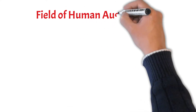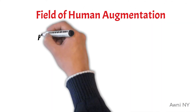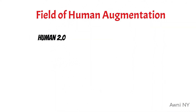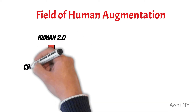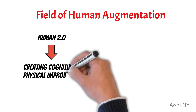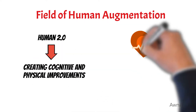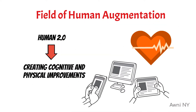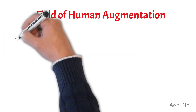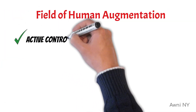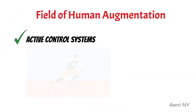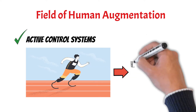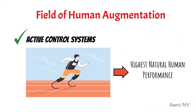The field of human augmentation, sometimes referred to as human 2.0, focuses on creating cognitive and physical improvements as an integral part of the human body. An example is using active control systems to create limb prosthetics with characteristics that can exceed the highest natural human performance.